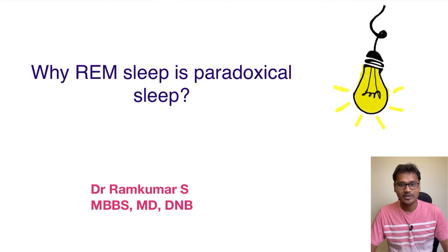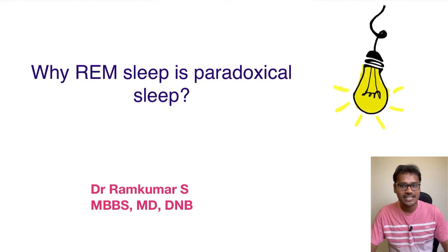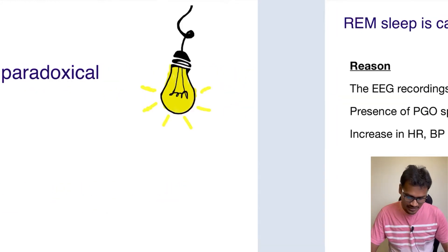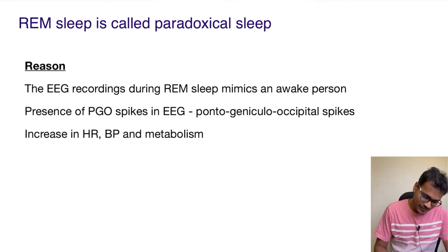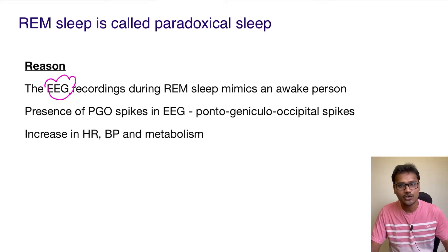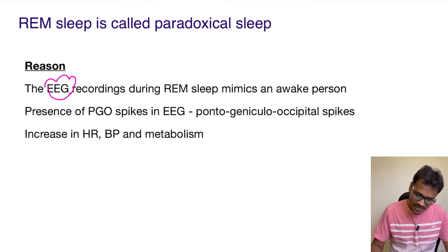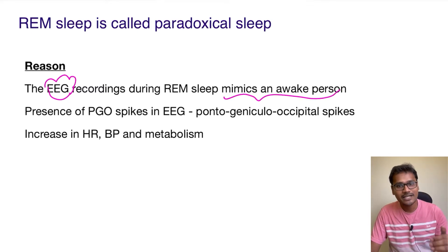Hello everyone, welcome back to my YouTube channel Physiology Learning. In today's 'Explain Why' series, we are going to understand why REM sleep is also called paradoxical sleep. Let's try to understand what the paradox is here. Whenever a person is sleeping and is in a REM phase, an EEG recording — also called an electroencephalogram recording — shows as if the person is awake, even though the person is actually sleeping.